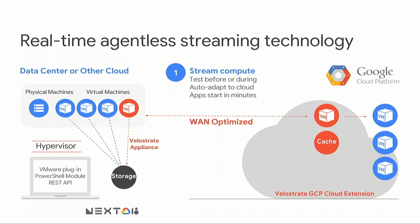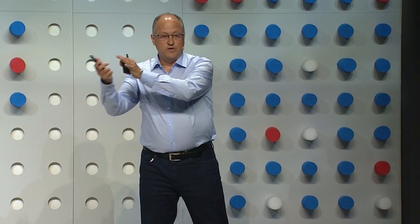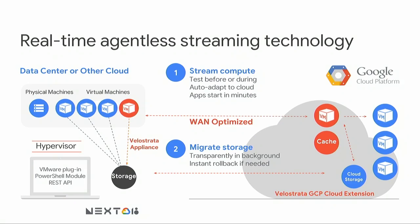The bottom line: you have an instance running on-premises, and magically a few minutes later it's running fully operational in the cloud. Once that happens, in the background we kick off in parallel a data migration process that takes all the cold data and starts migrating it. Importantly, the workloads are already running operationally in the cloud while the data migrates — you don't have to wait. When data is fully migrated, you hit the detach operation, cut the cord, convert to completely cloud storage, and you're done.